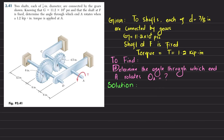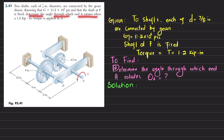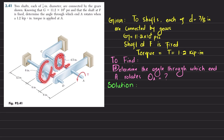Welcome back. Problem 3.41 — the statement is: two shafts each of 7/8 inch diameter are connected by gears. Knowing that G is 11.2×10⁶ psi and that the shaft at A is fixed at F, determine the angle through which end A rotates when a 1.5 kip·inch torque is applied at A. You can see this is one shaft, this is another shaft, and there are gears B and D which are connected with each other.